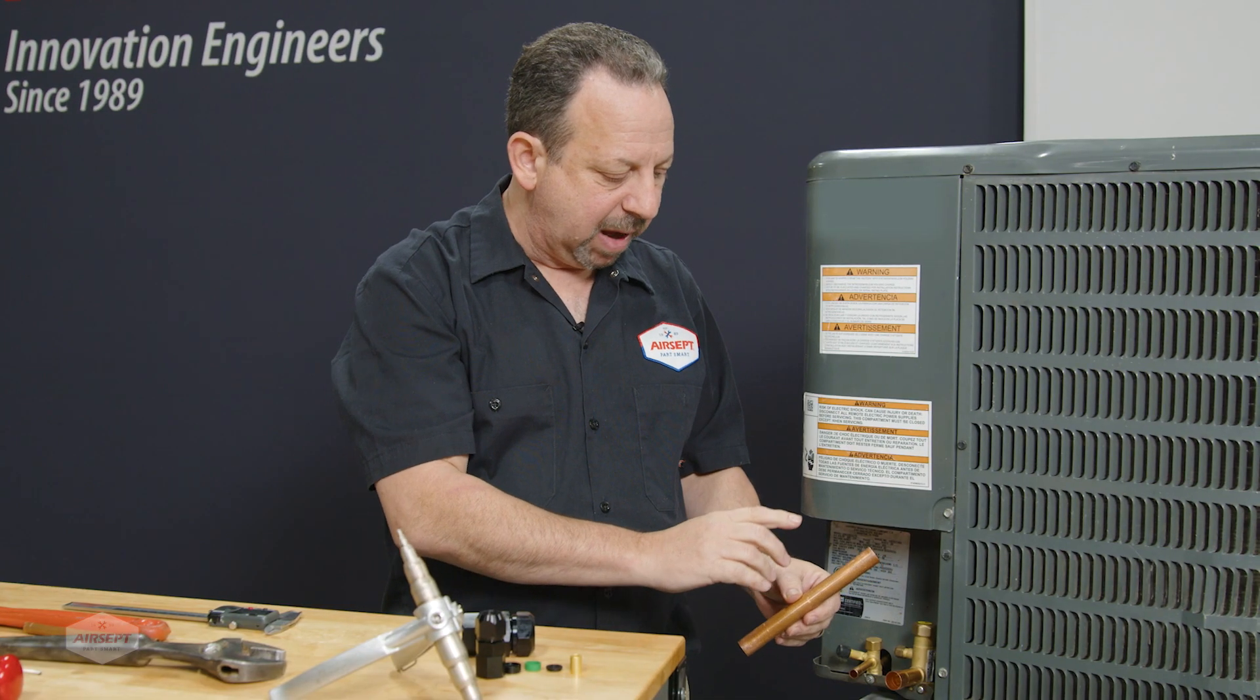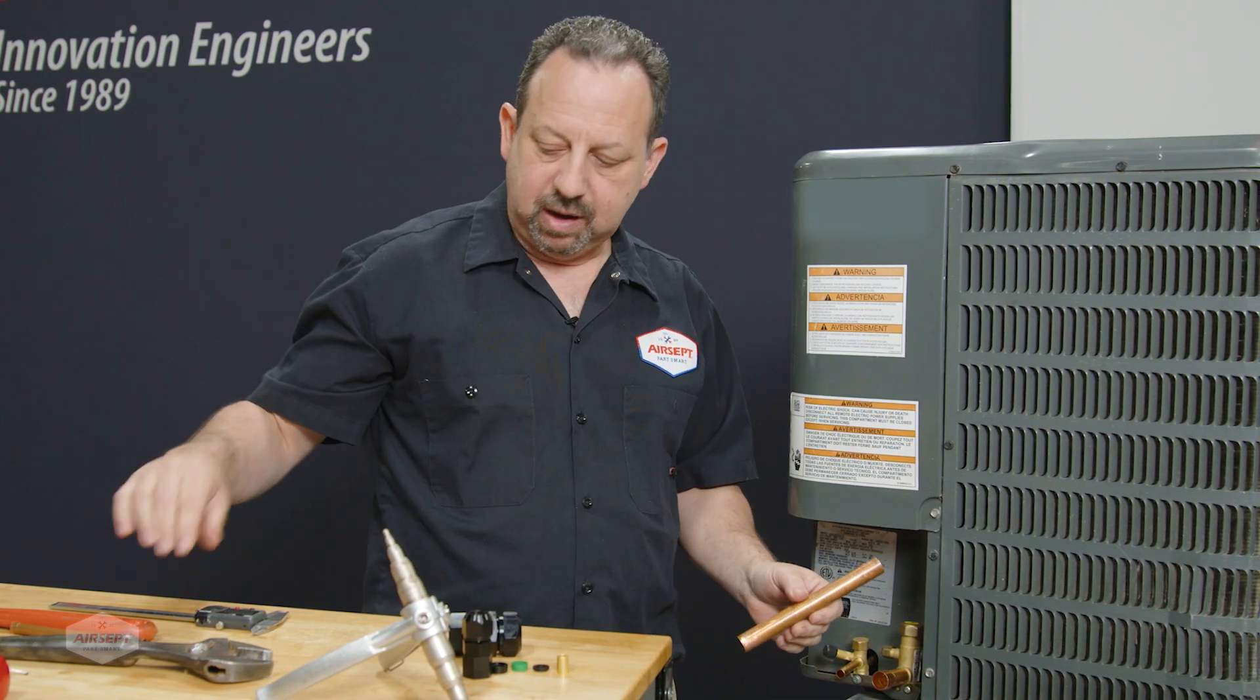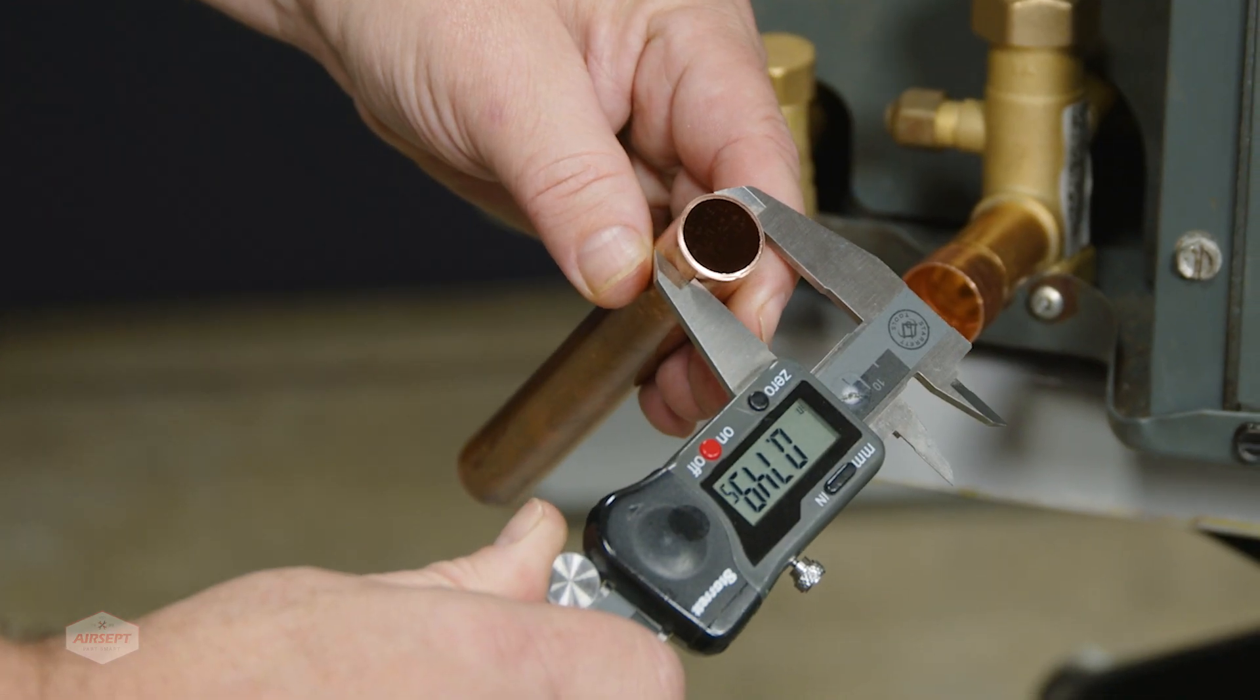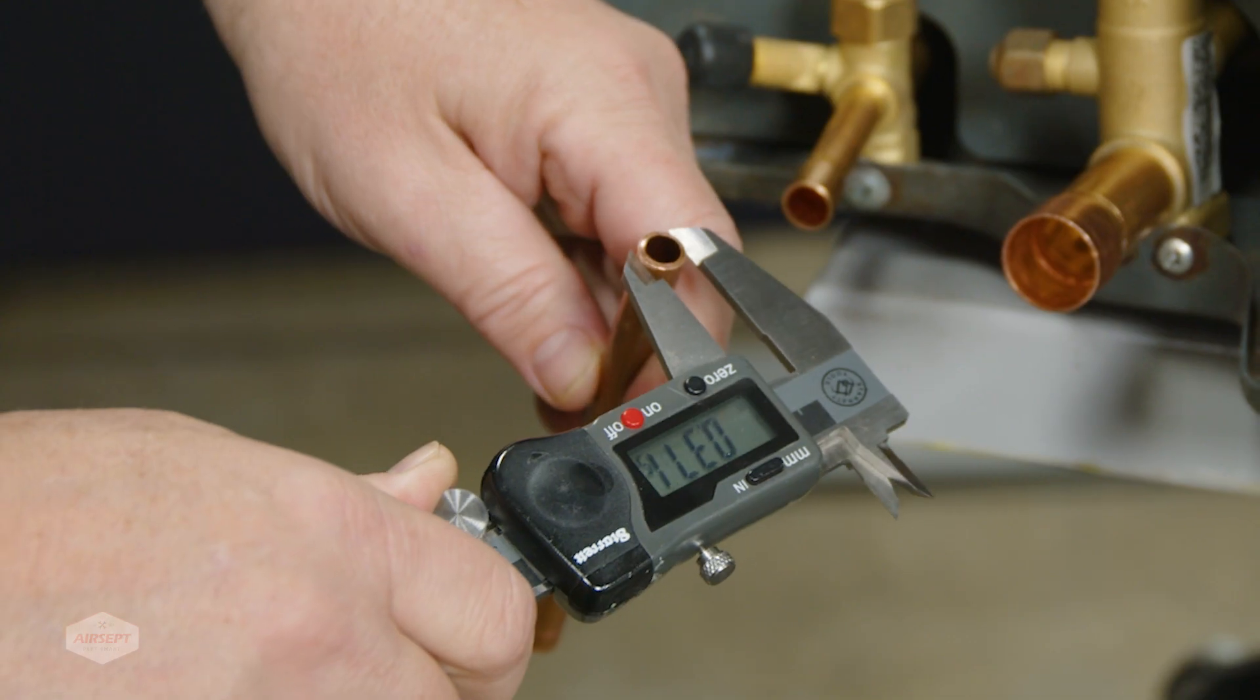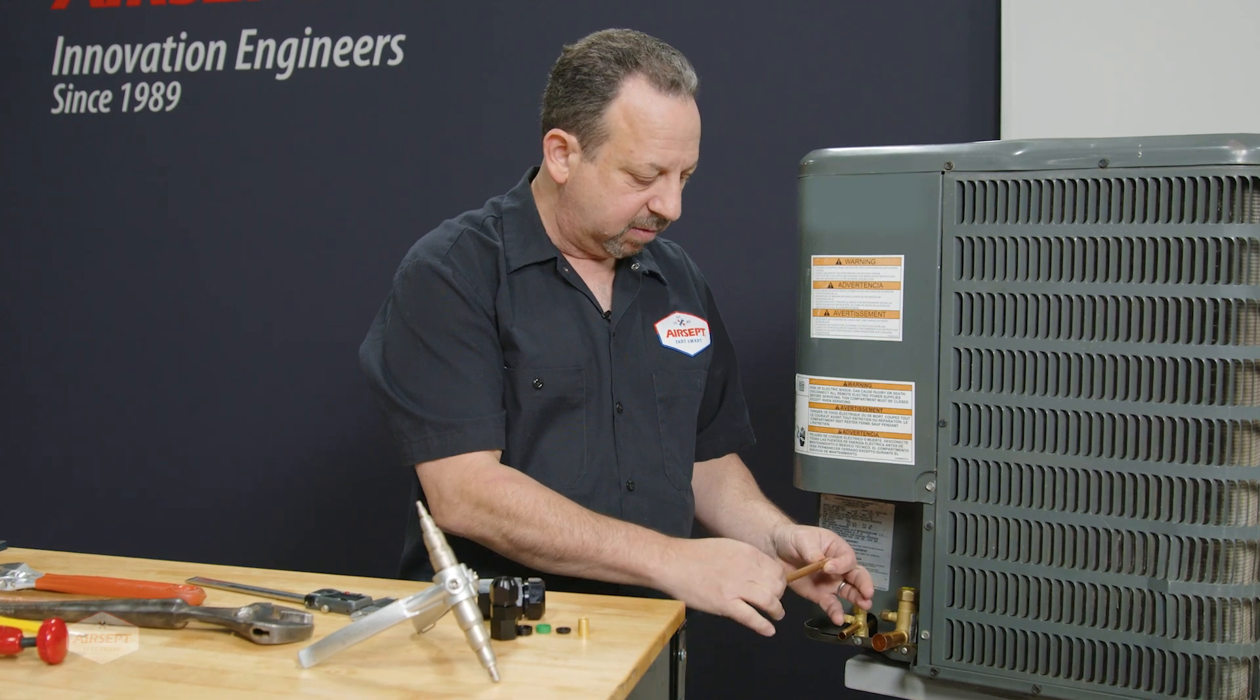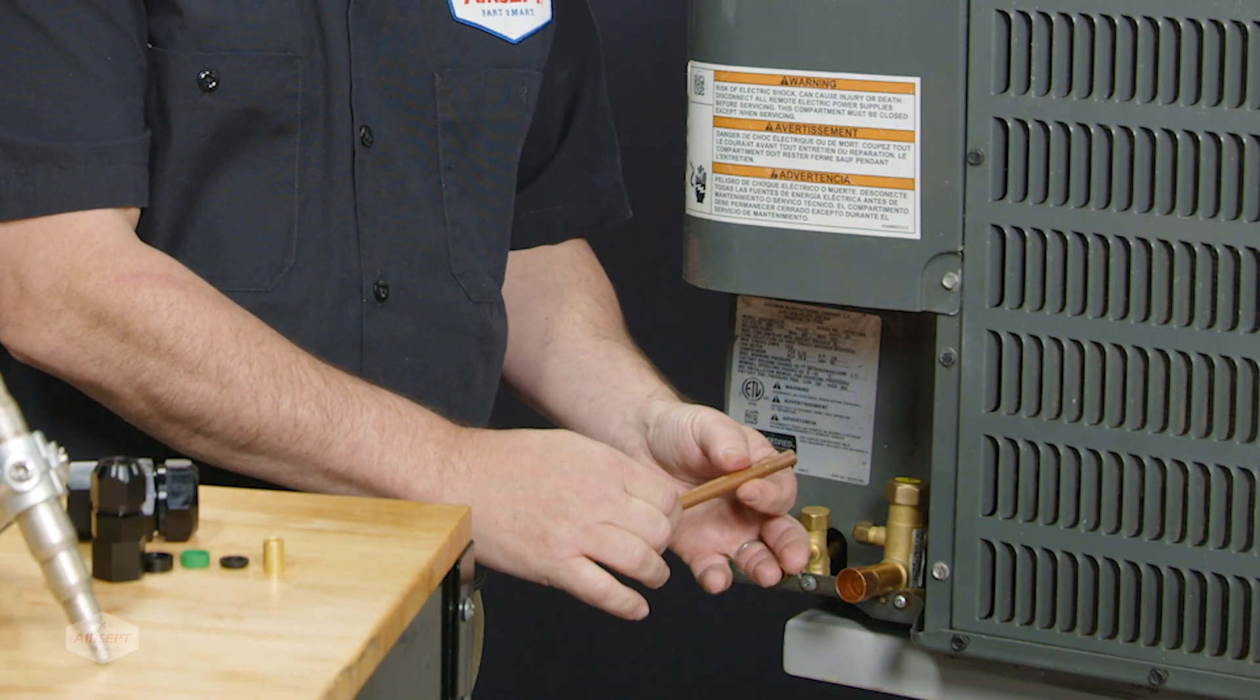The important part about the mating line is the OD needs to be accurate. So we want to verify using a caliper—we're measuring 0.75 and the other piece is 0.375. You want to make sure that these copper tubes, especially soft copper tubing, have a couple inches of straight line and that it is round.